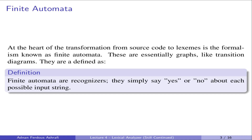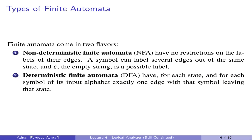To construct a finite automata, we essentially use graphs along with some tabular data. Together these allow us to specify a particular automata.